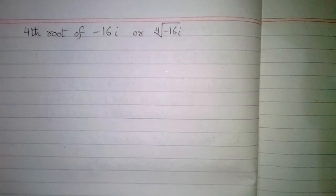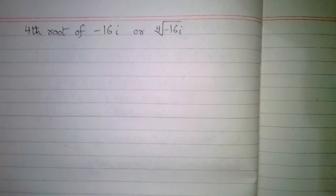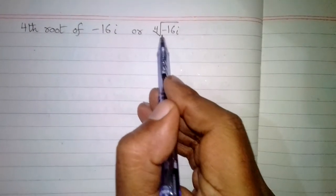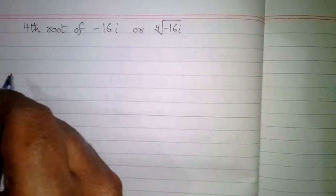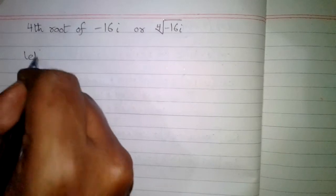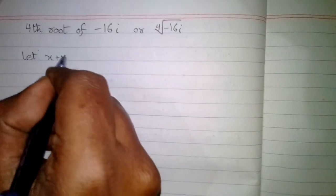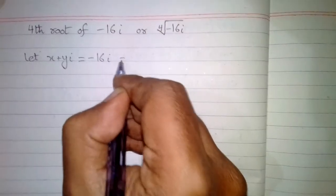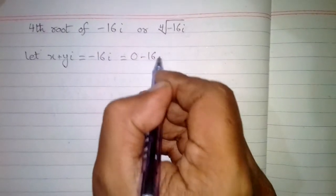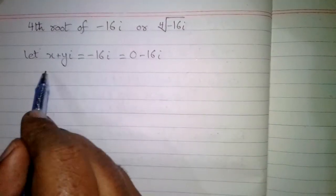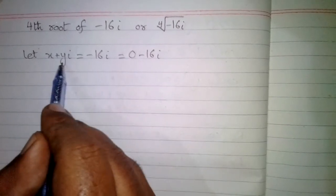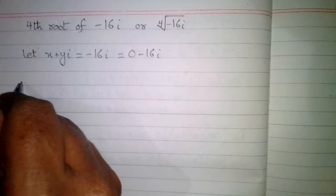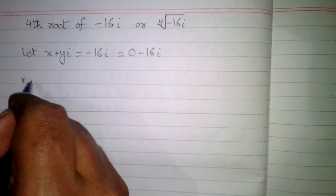In this video we will find the 4th root of minus 16 iota. First, let x plus y·iota equal to minus 16 iota, which we can write as 0 minus 16 iota. So the real part x is equal to 0 and the imaginary part y is equal to minus 16.